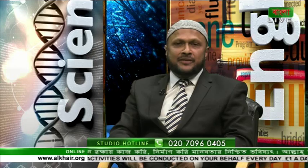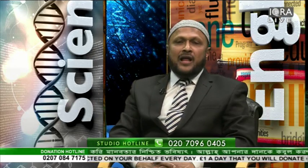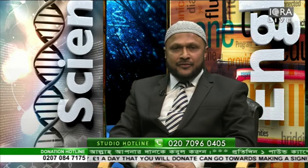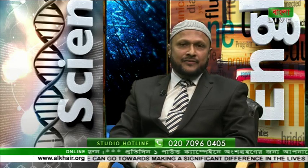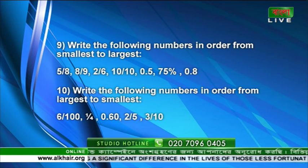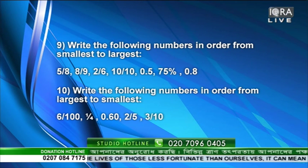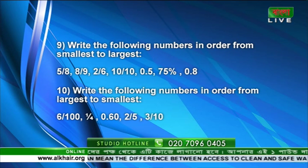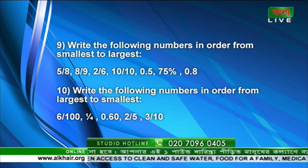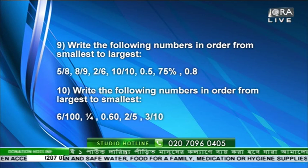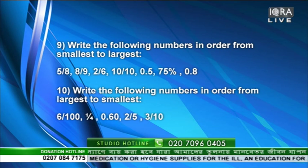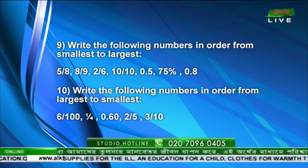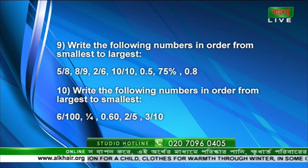Now question ten on slide three is for you. Write the following numbers in order from largest to smallest: six over one hundred, one quarter, 0.6, two fifths, and three tenths. Work out which is the largest first, then the second, down to the smallest.